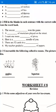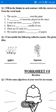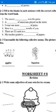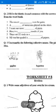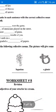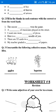Students, I am telling you about worksheet number 7, question number 2: Fill in the blanks in each sentence with the correct collective noun from the word bank. First of all, what is a collective noun? The names of a number of persons and things are called collective nouns. For example: team, army, family.